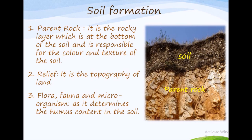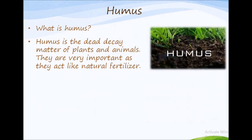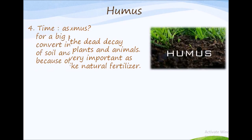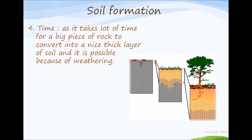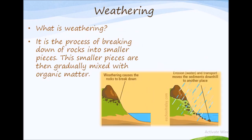Humus is nothing but the dead and decayed matter of plants and animals. They are very important as they act like natural fertilizers. The fourth factor is time, as it takes a lot of time for a big piece of rock to convert into a nice thick layer of soil, and it is possible because of weathering — the process of breaking down of rocks into smaller pieces. These smaller pieces are then gradually mixed with organic matter.